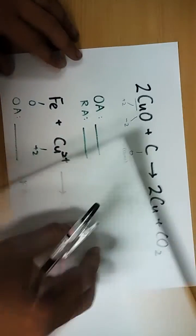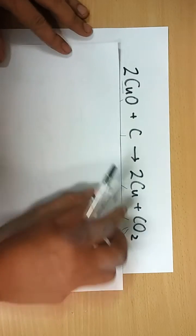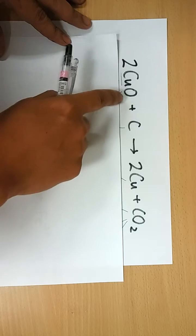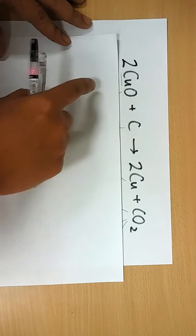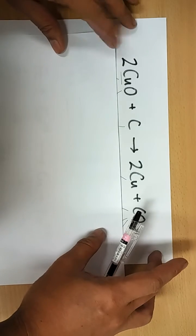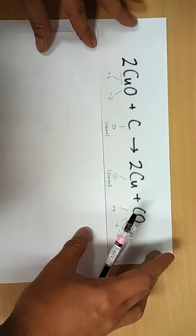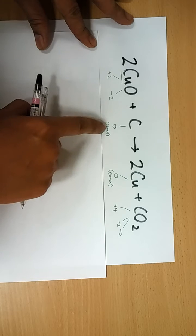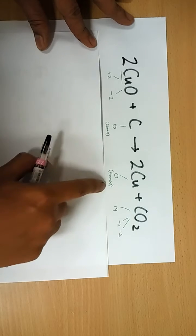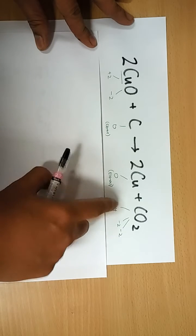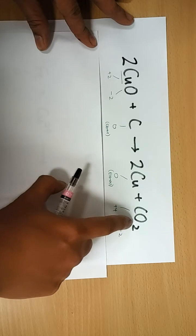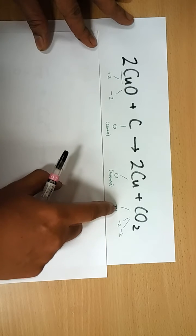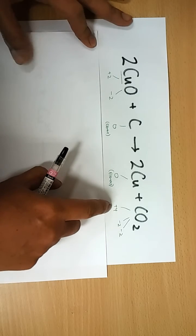Let's start. In a reaction like this, I settle it with oxidation states, which I have found out: plus 2, minus 2, and 0 for an element. Plus 4, minus 2, minus 2 — so oxygen is minus 2.